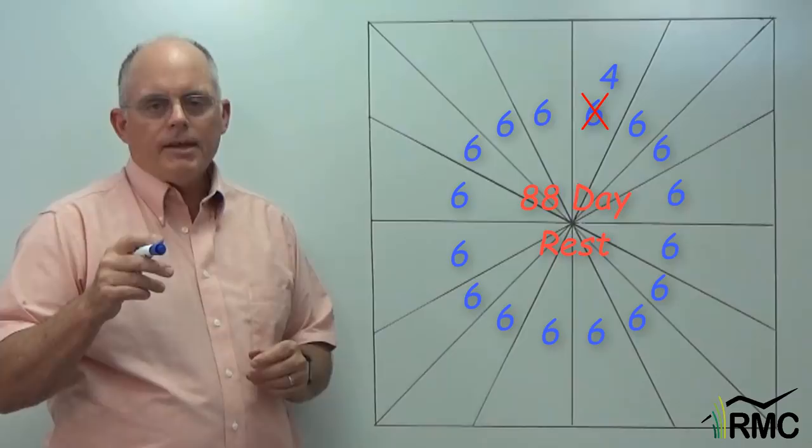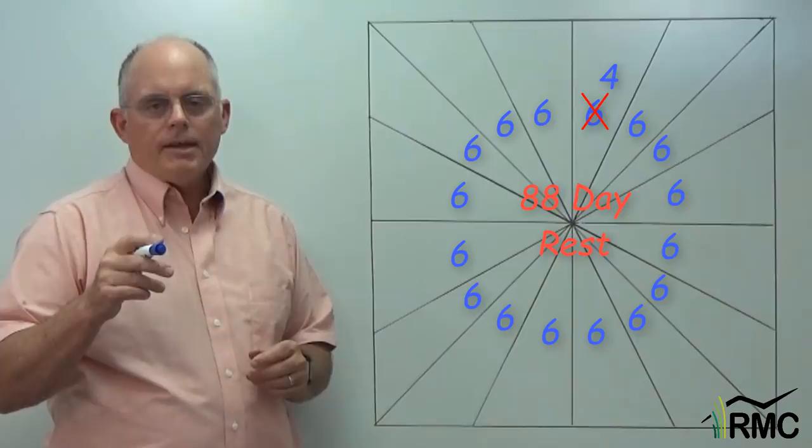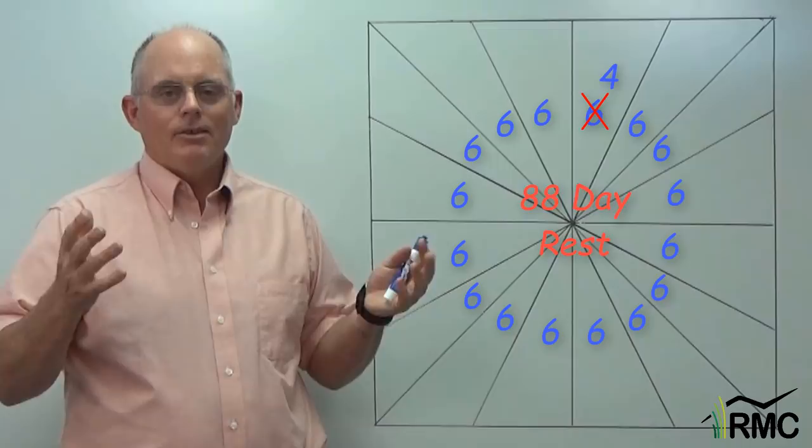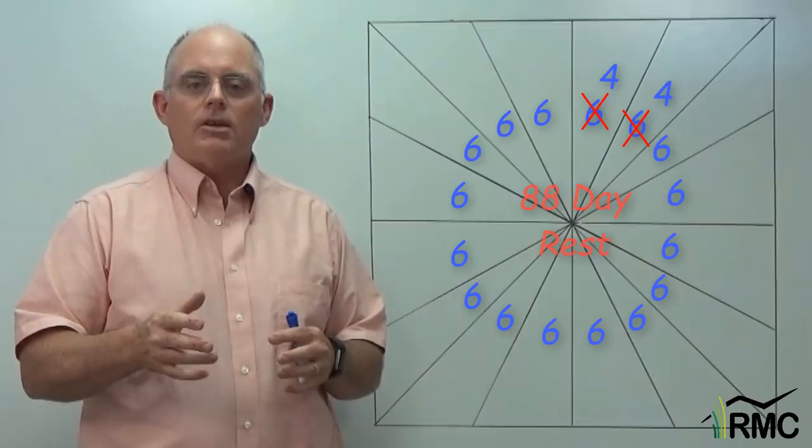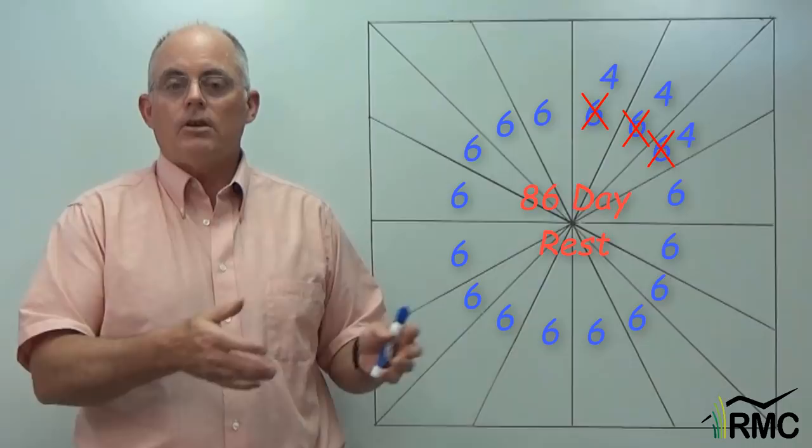Let's play this out. What do you think happens on day four of the graze period in the next paddock? Right, he sees the same thing. So he cuts the graze period down from six days to four here too. And instead of 88 days of rest, all the pastures now get 86 days of rest. And the next paddock? Four days instead of six there too. And now it's down to 84 days of rest. And so it goes.